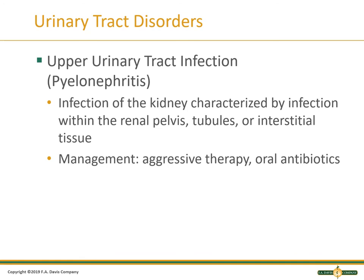Upper urinary tract infection is pyelonephritis. Is this a lower UTI that has traveled up into the kidneys? Is it due to an acute infection, or do they have something more chronic like urinary reflux — persistent back-flow of urine leading to recurrent pyelonephritis? Is it an undiagnosed UTI that has traveled up? Health history is critical. Management includes aggressive therapy and oral antibiotics. However, if they have signs and symptoms of sepsis — hypotension, tachycardia, altered mental status — those patients need to go to the emergency room immediately; do not treat them outpatient.